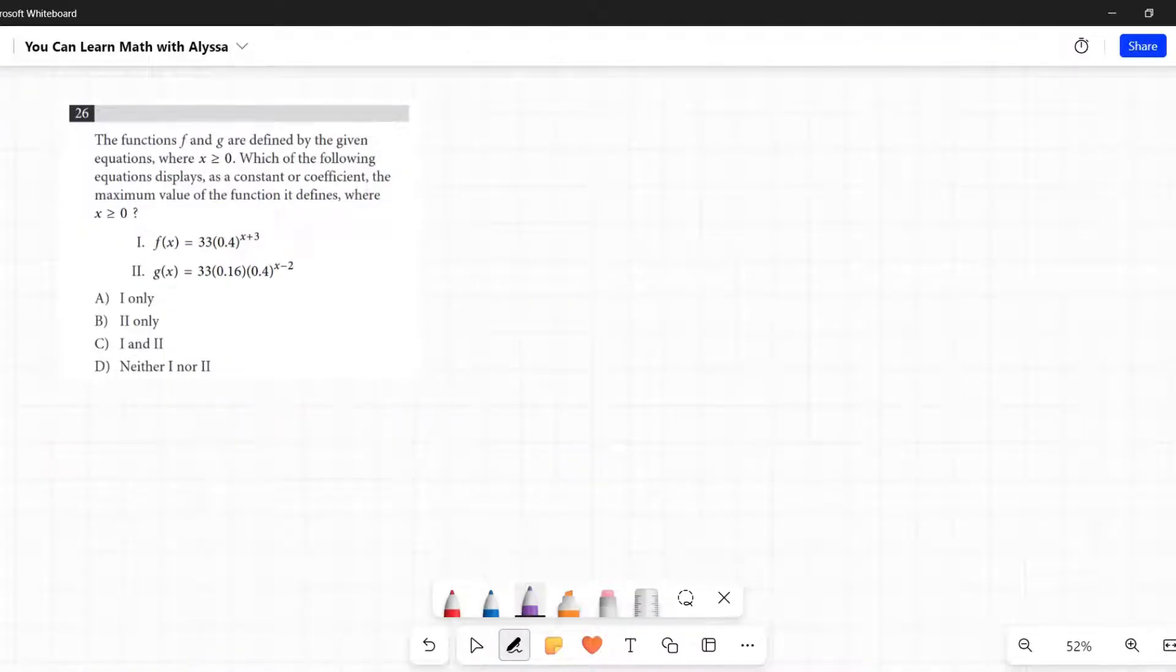All right, the last two on these, they kind of up the difficulty, especially number 27, but 26 definitely is a jump up as well. The functions f and g are defined by the given equations where x is greater than or equal to 0. Which of the following equations displays as a constant or coefficient the maximum value of the function it defines, where x is greater than or equal to 0?